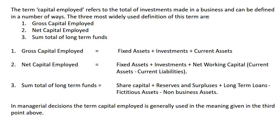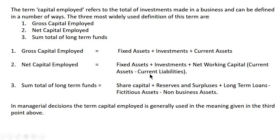The three most widely used definitions of capital employed are: first, gross capital employed; second, net capital employed; and third, sum total of long-term funds. Gross capital employed refers to fixed assets plus investments plus current assets. Net capital employed refers to fixed assets plus investments plus net working capital, where net working capital means current assets minus current liabilities.